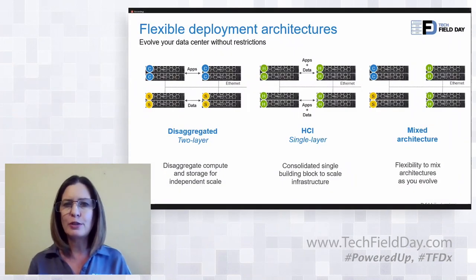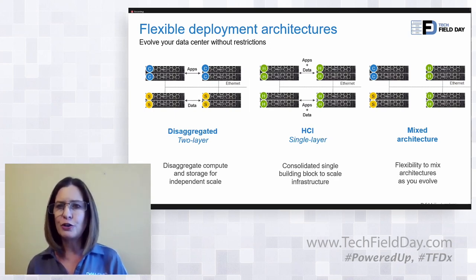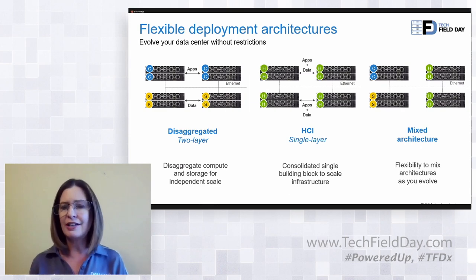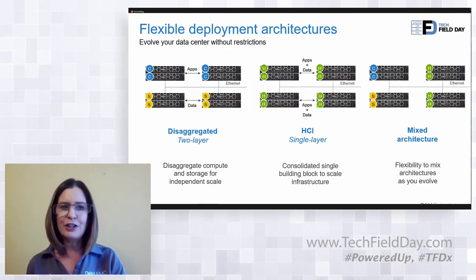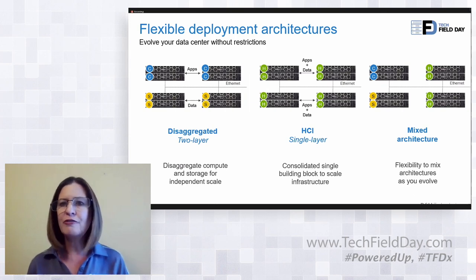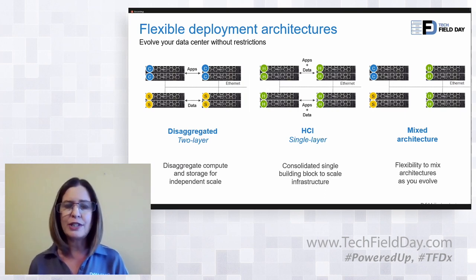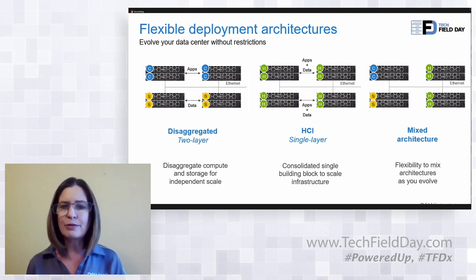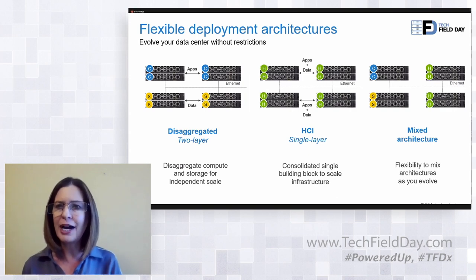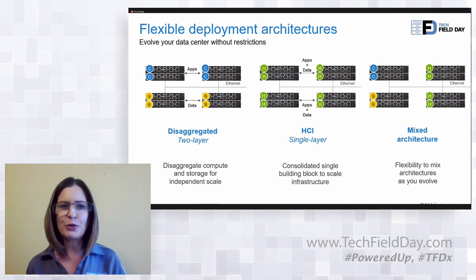To recap the configurations we support: you can do the disaggregated two-layer, where compute is separate from storage, or HCI — if you install both SDS and SDC on the same node. You can also mix and match: for example, two-layer for bare metal workloads and HCI nodes in the same cluster. It is very flexible in how you can build and grow over time. Many customers start with a smaller cluster and grow it quickly as new workloads arrive.